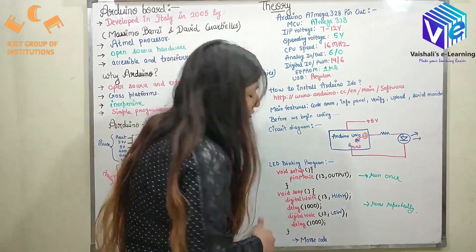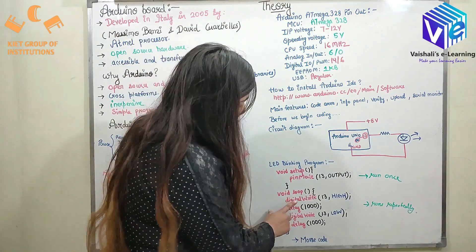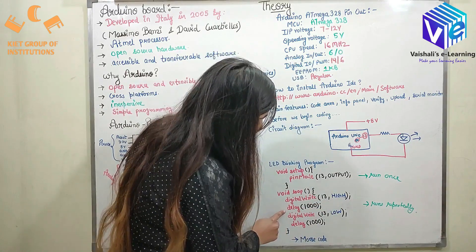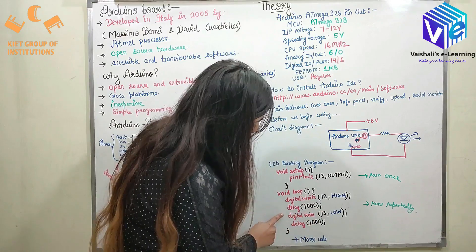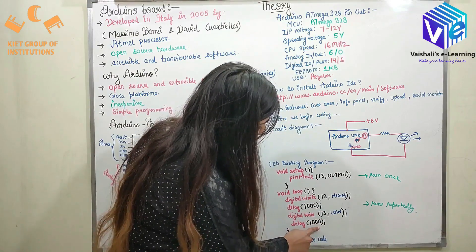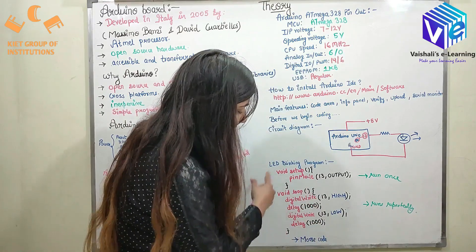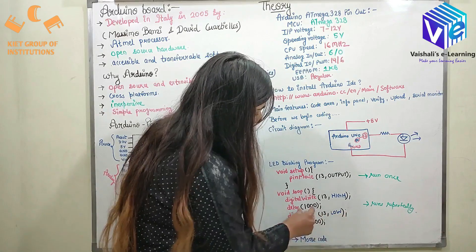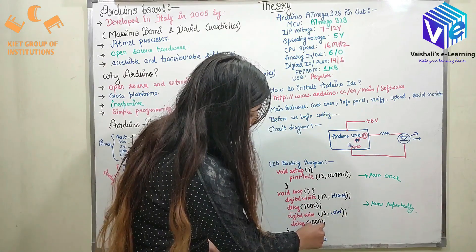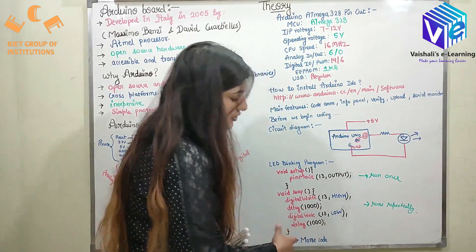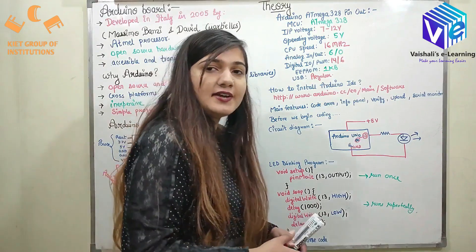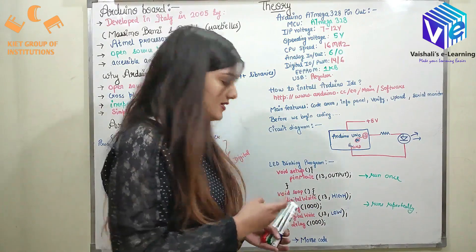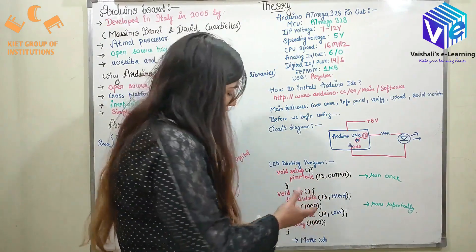Now the next thing is the loop part, where I will discuss the logic of the program. Digital write 13 high means the 13th pin is high, and after that I have a delay of 1000. After that pin 13 will be low and again I will have a delay of 1000. It will keep on repeating in a loop — the 13th pin will be high for some time and low for some time. We can change these delay values. We have taken the time to be 1000 and then 100. We can also use any number of LEDs — green, red, blue — and make some decorative colors as well.